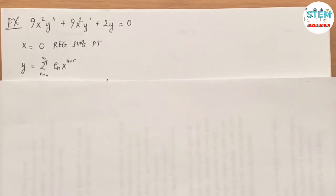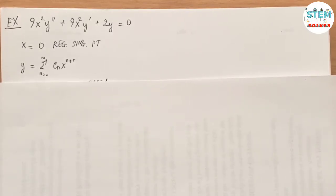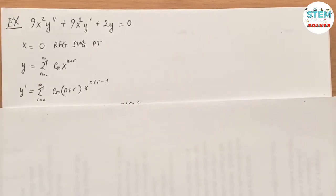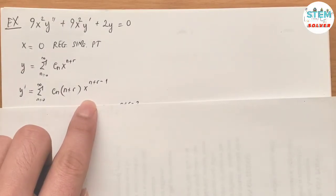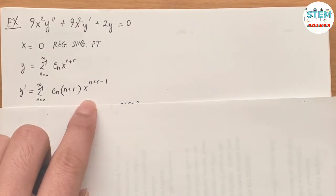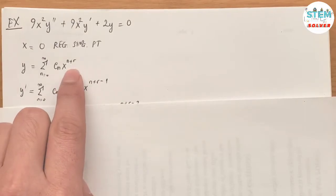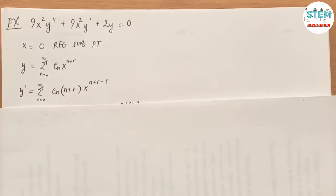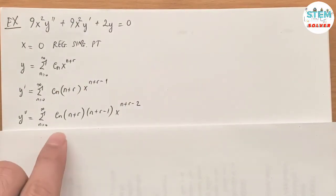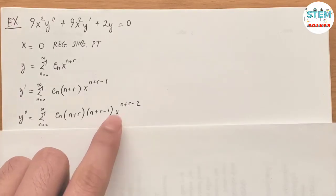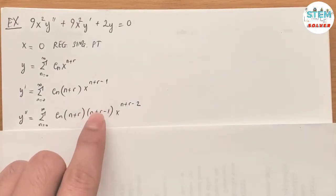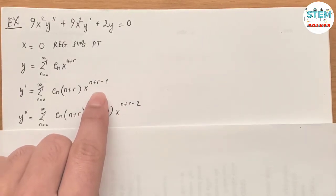Our solution is given in the form Y equals a power series from n=0 to infinity. Taking the first derivative gives another power series — we bring down the exponent and subtract the exponent by 1. Taking the second derivative gives yet another power series, again bringing down the exponent and subtracting by 1.